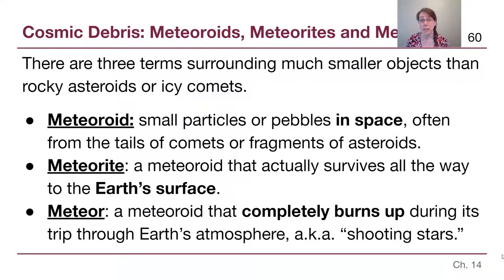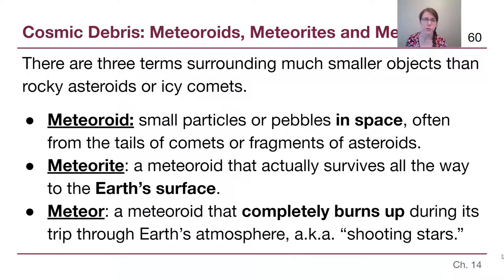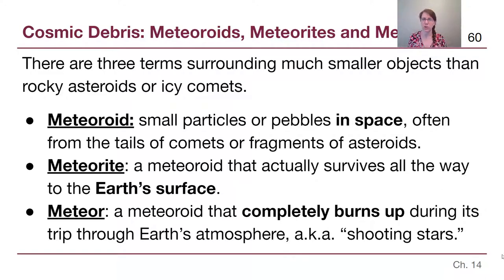The last things in this video are the terms meteor and meteorite, and technically the term meteoroid — which is when they are in space. All of these terms describe the same general category of stuff: small, rocky pebbles or dust grains that interact with Earth.